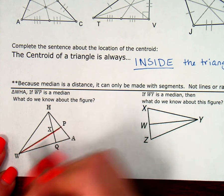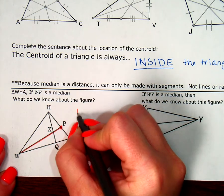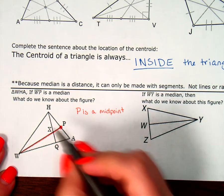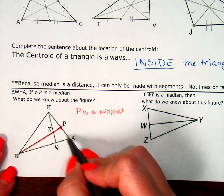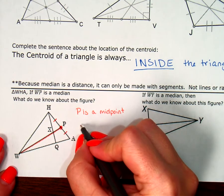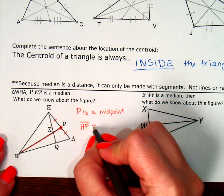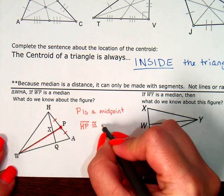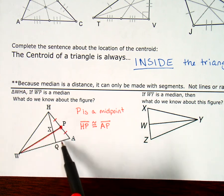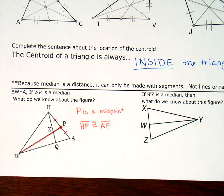So, it starts at a vertex, and it goes to a midpoint. We're looking at WP. So, W is my vertex, which means we know something about P. P is a midpoint, which means if P is a midpoint, the definition of midpoint means it divides a segment in half. So, it's dividing segment HA exactly into two equal pieces. So, I also know that segment HP is congruent to segment AP. That is all I know about this figure.